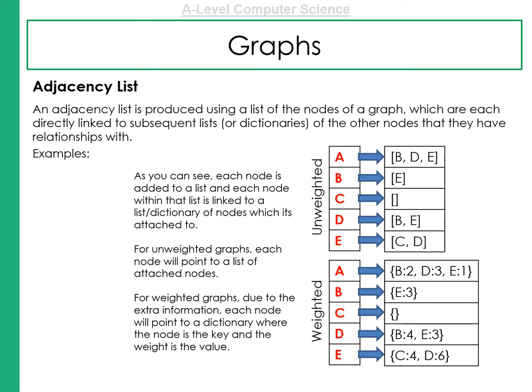Now, an adjacency list is just a different way of representing a graph. We use a list to create this. Now remember, a list can be a very, very Python-esque data structure. But we can think of this as being working in other programming languages as well.